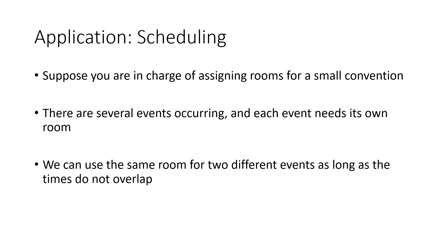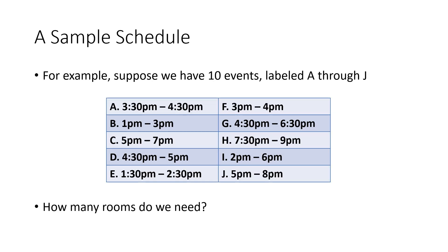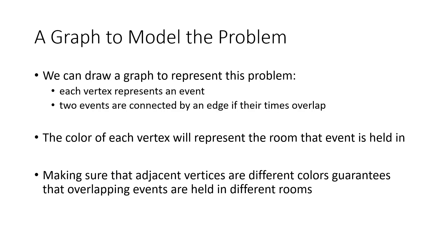There are more applications to the graph coloring problem than just coloring regions on a map. Suppose you're in charge of assigning rooms for a small convention. There are several events occurring, and each event needs its own room, but we can use the same room for two different events as long as their times don't overlap. We draw a graph where each vertex represents one of the 10 events labeled A through J, and we connect two events by an edge if their times overlap. The coloring of a vertex represents the room that event is held in, so adjacent vertices must have different colors, ensuring overlapping events are in different rooms.